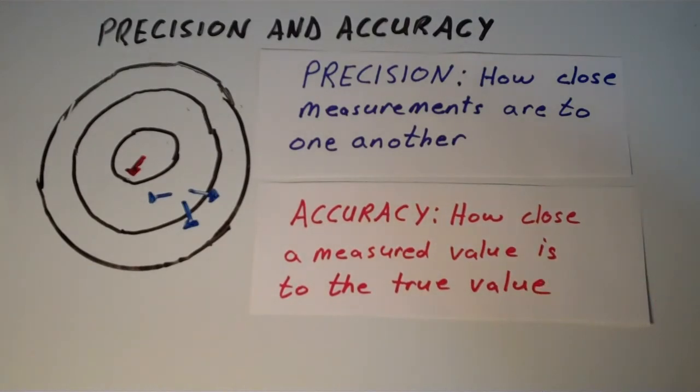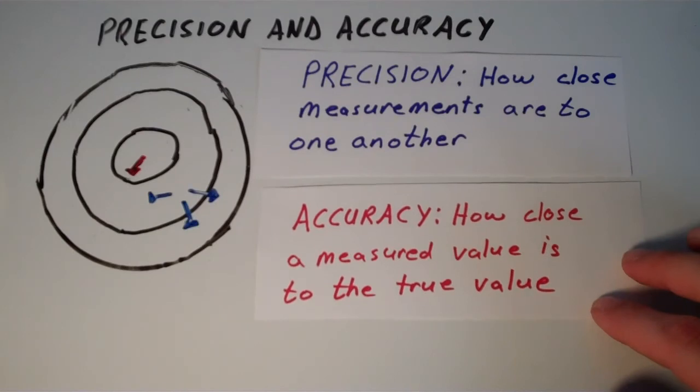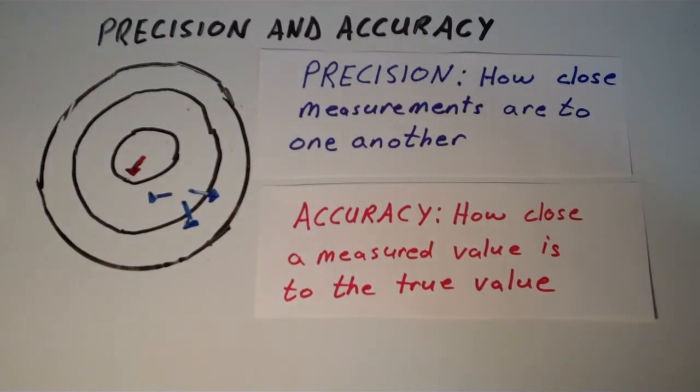So if I measure something and you want to talk about how accurate that measurement is, we're talking about how close is it to the true value of whatever we're trying to measure. So you can have one without the other. You can have a series of measurements that is precise but not accurate, and you can also have a series of measurements that is accurate but not precise.